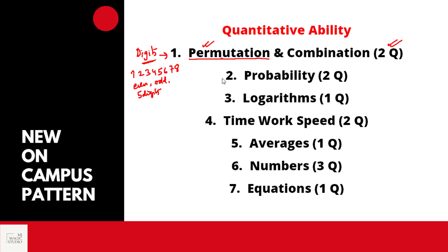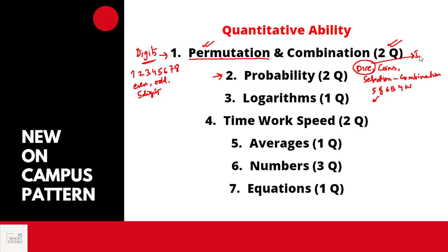Next two questions will be from probability — dice, coins, and maybe a selection process where we use the combination formula. For example: out of 5 green, 6 black, 4 white balls, draw 2 balls such that both are of the same color or different color. Or: there are 5 persons from company G, 6 from company B, 4 from company W — what is the probability that company G's person is selected? Dice is my pick — if two dice are rolled, what is the probability of getting 4 on both dice, at least one, or sum equals to 7, 8, 9, 10, 11, 12.